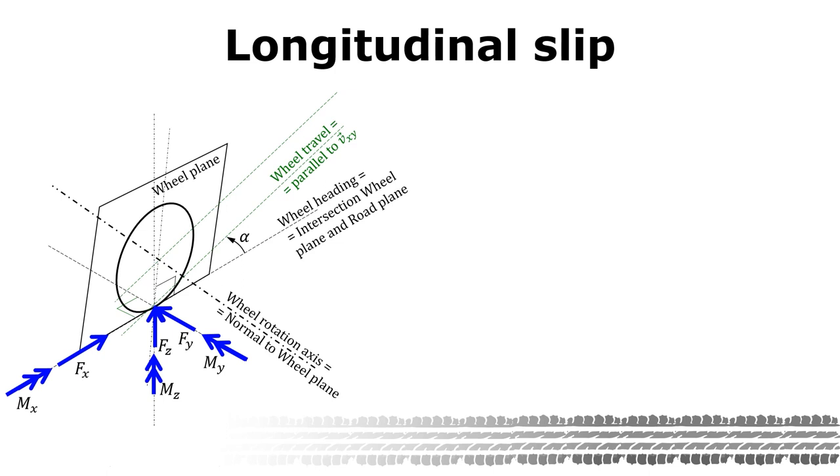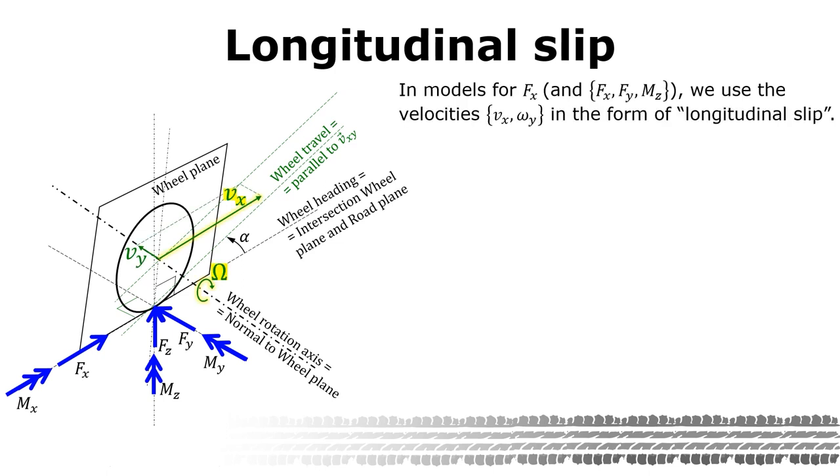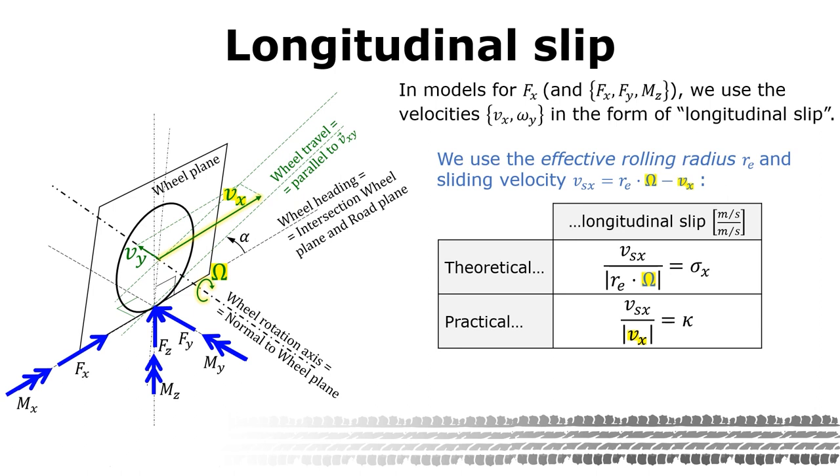We start with this slide about the longitudinal slip. There are some different slip definitions but they all use the translational velocity vx and the rotational velocity omega y. The definitions also use the radius re to express the sliding velocity sv with the subscript sx. The radius re is called the effective rolling radius. Here are two variable definitions: theoretical slip and practical slip. It is the theoretical slip sigma x which will be used in this course because that is the most physically motivated definition.